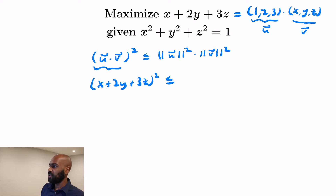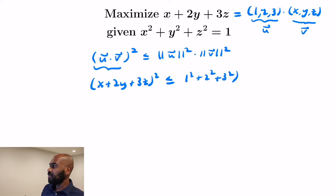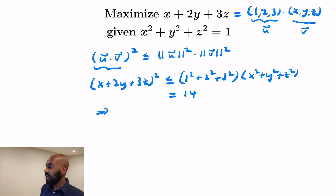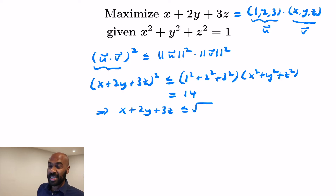We have ‖U‖² = 1² + 2² + 3² = 14, and ‖V‖² = X² + Y² + Z² = 1 in our situation. Therefore X + 2Y + 3Z ≤ √14, and we know this bound can actually be achieved.